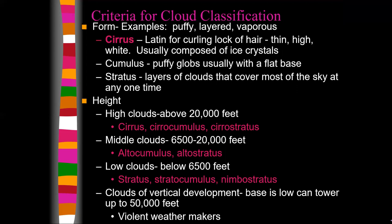For height, there are four classifications: high clouds, middle clouds, low clouds, and clouds of vertical development. These heights vary depending on latitude. On average, high clouds are above 20,000 feet and have names like cirrus, cirrocumulus, and cirrostratus. Middle clouds range from about 6,500 to 20,000 feet and have 'alto' in the name — altocumulus or altostratus, meaning middle-level puffy or layered clouds.